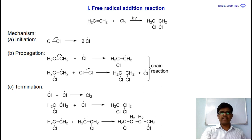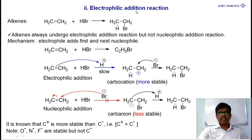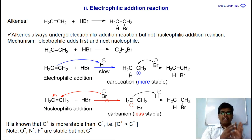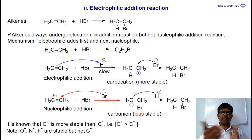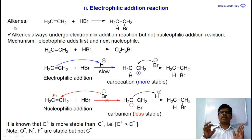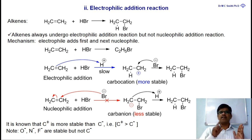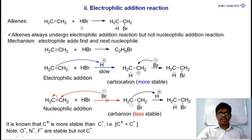The second type is electrophilic addition reaction. The name itself says that an electrophile is added to alkenes. Since alkenes are electron-rich compounds and may act as nucleophiles, they easily donate a bonded pair of electrons to make a bond. That is why alkenes always undergo electrophilic addition reactions, and the electrophile is added first.